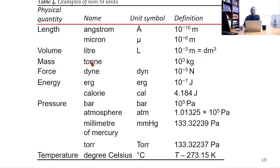Mass: tonne, doesn't have a unit symbol, 10³ kg. Force: dyne, dyn, 10⁻⁵ newton. Energy: erg, unit symbol erg, definition 10⁻⁷ joules. Energy again: calorie, unit symbol cal, 4.184 joules.